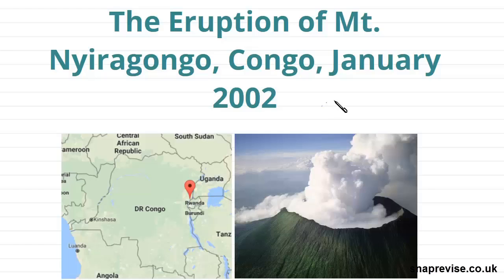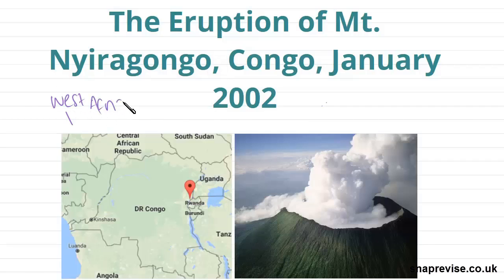First of all we're going to look at the eruption of Mount Nyiragongo, which was in the Democratic Republic of Congo, as shown on this map here, which is in East Africa — sorry, West Africa. This occurred in 2002. The red pin here shows you the exact location of the volcano, so it's on the eastern side near the borders of Uganda and Rwanda, and this is a photo of the volcano here.